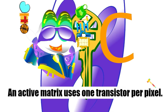Now you have pixels turning on and off, and you have them either running in rows and columns, or you have them turning on and off running independently. So here you have an active matrix that uses one transistor per pixel. This could be considered expensive, producing a better quality because it is turning on and off each pixel independently.